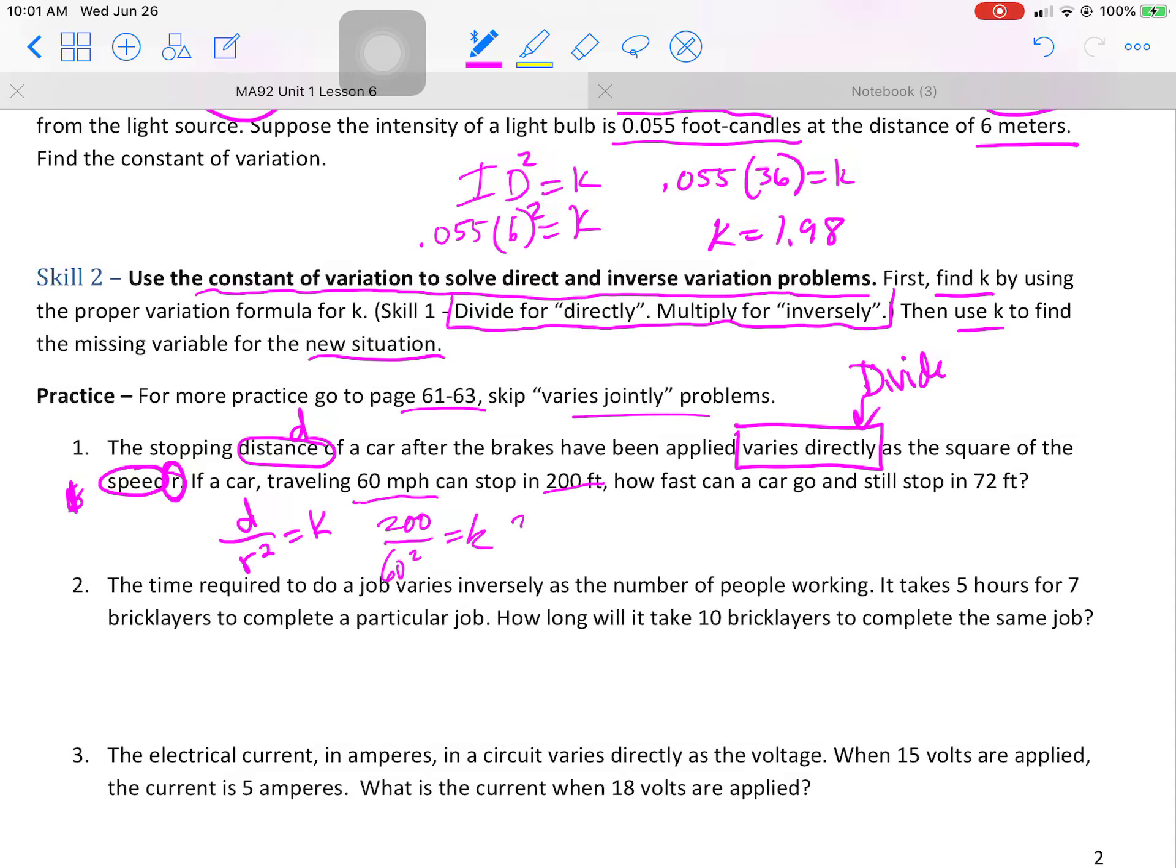Order of operations says square the 60 first, which is 3,600. Put that in your calculator, and you're going to get 1/18. That's k. That is not the answer to the problem. That's k.